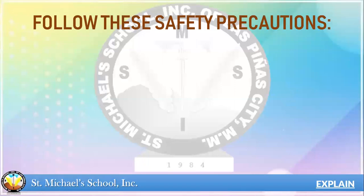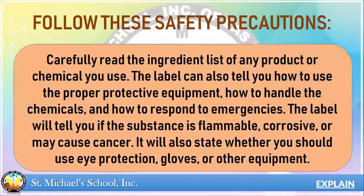Follow these safety precautions. Carefully read the ingredients list on any product or chemical you use. The label can also tell you how to use the proper protective equipment, how to handle the chemicals, and how to respond to emergencies. The label will tell you if the substance is flammable, corrosive, or may cause cancer.